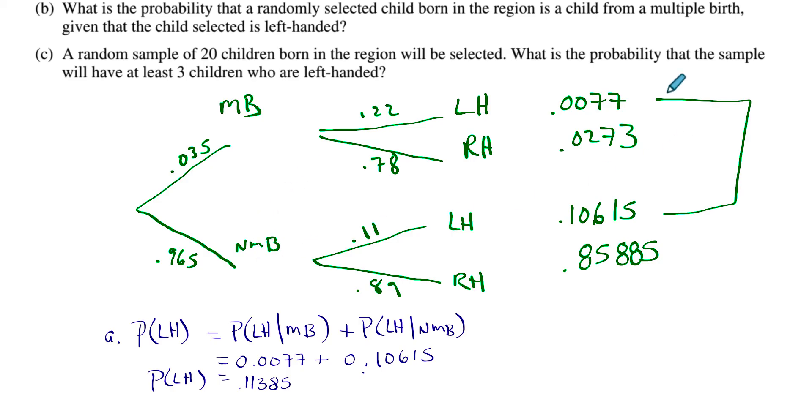So here's how I show that all out. The probability of being left-handed equals the probability of being left-handed given that you come from multiple births, plus the probability that you're left-handed given that you come from not multiple births, or single. I guess I could have used single births. So I take those two together. I show that this equals that, and this value right here equals this. And we get, make sure our decimal point is big enough, 0.11385. That is part A.